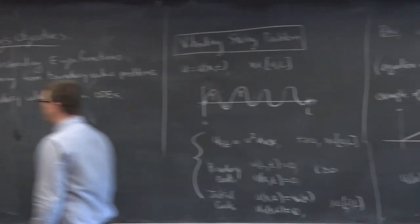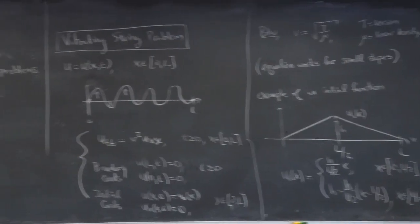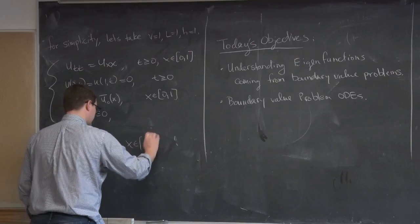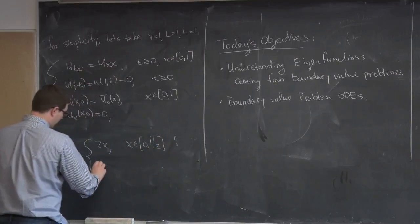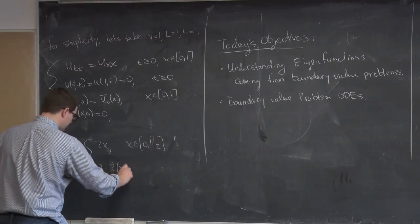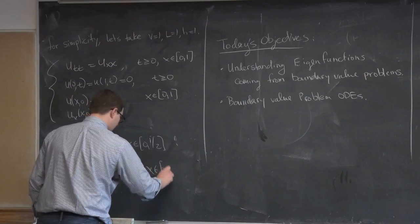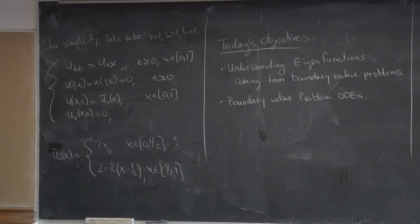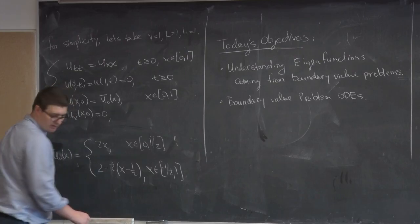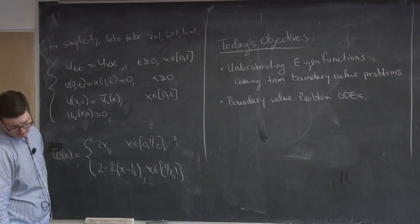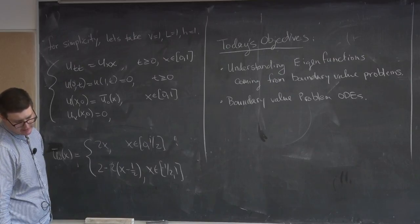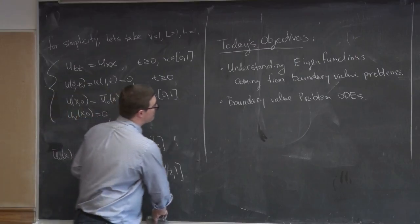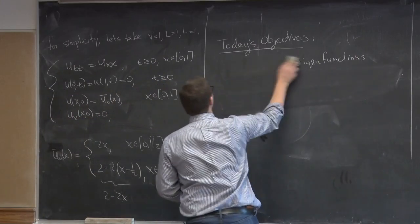Let's look at what the initial function becomes. U-zero-bar of x is 2x for x in zero to one-half, and 2 minus 2x for x in one-half to one — so this is just 2 minus 2x for the second piece. We won't get to this part right now, so it's not so important at the moment.